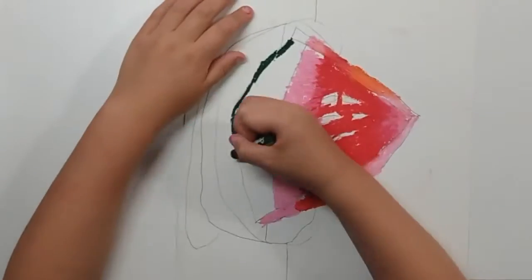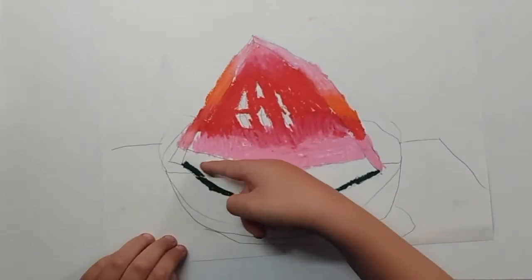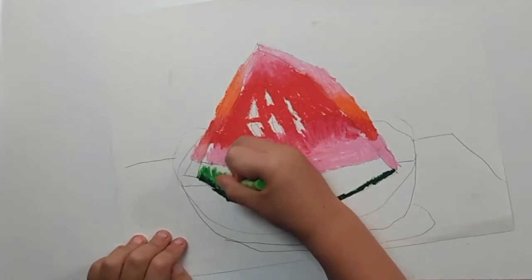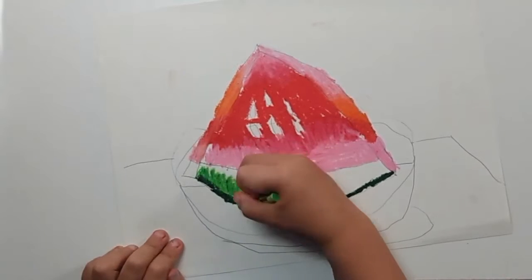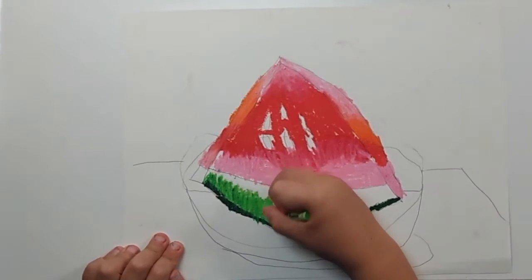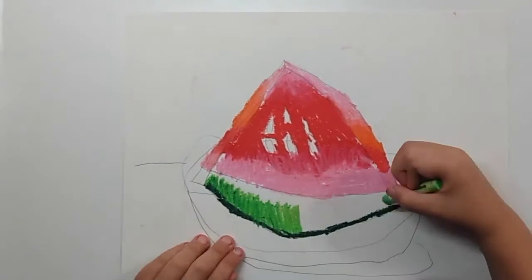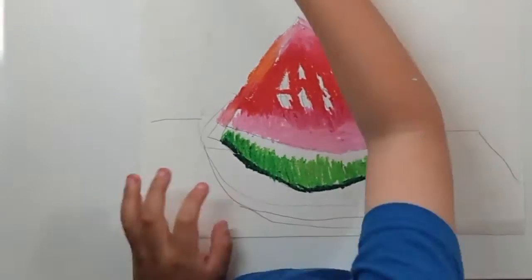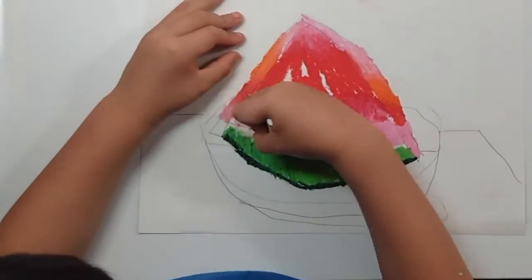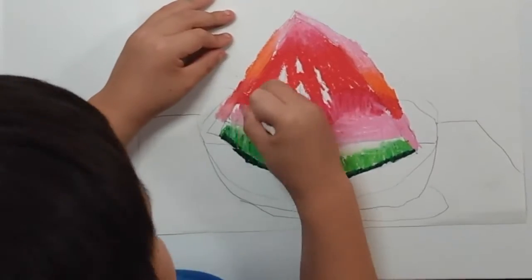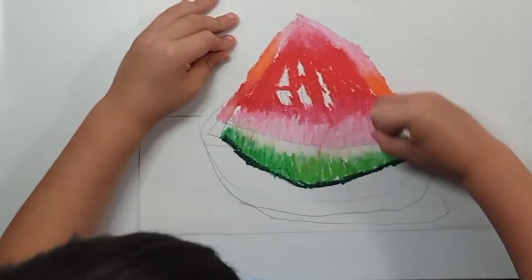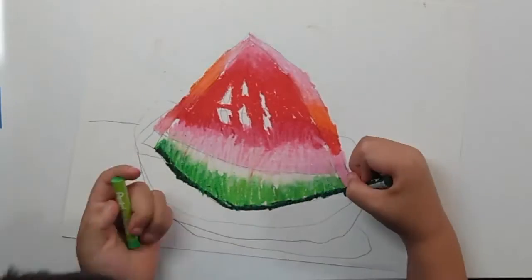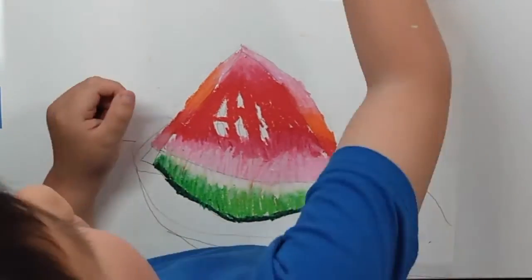Now Asher uses a dark green to color in the skin, and a light green to color in the rind. Asher colors with long strokes to create the texture of the watermelon. Don't forget to cover the white spots.